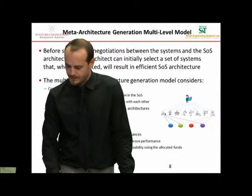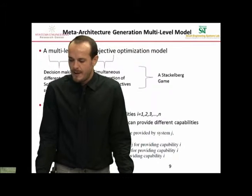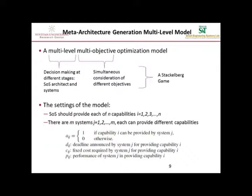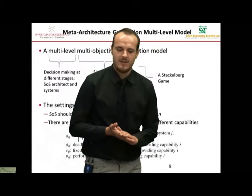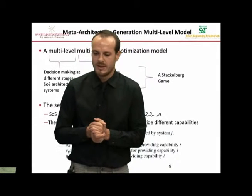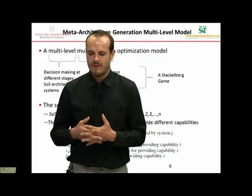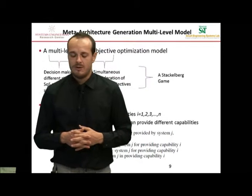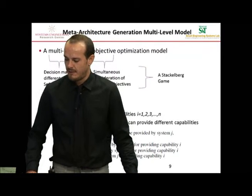This is a multi-level optimization model because we model decision-making at different stages. We model the decisions of the SOS architect and the decisions of the systems. It is also a multi-objective optimization model because we simultaneously consider different attributes such as cost minimization, deadline minimization, and performance maximization. In the big picture, this is a Stackelberg game: the SOS architect is the leader at the upper level, selecting the systems and funds allocated, while the systems are followers at the lower level, deciding how to use the funds to improve their capabilities.